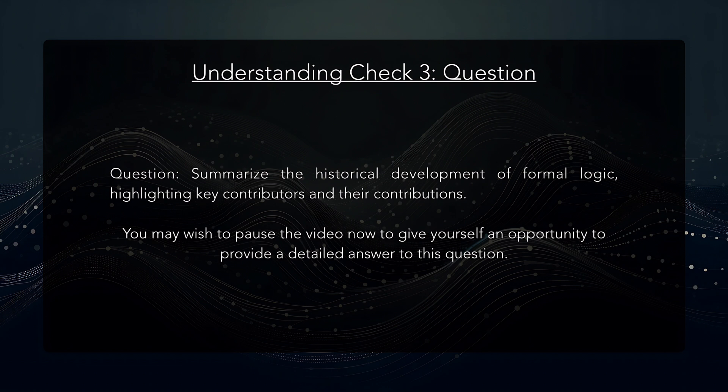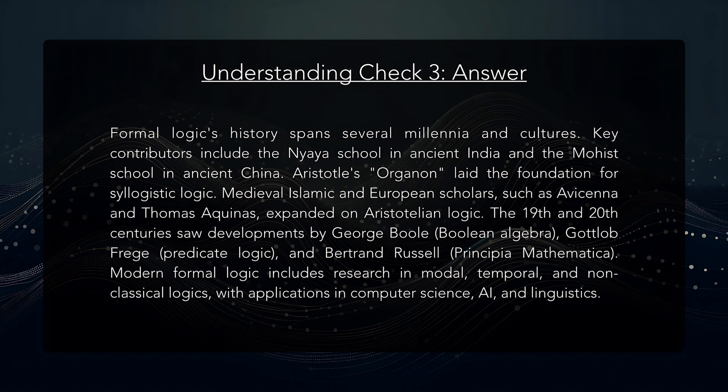Let's take a look at a final question to check our understanding of the material just presented. You may wish to pause the video now to give yourself an opportunity to provide a detailed answer. Question: Summarize the historical development of formal logic, highlighting key contributors and their contributions. Answer: Formal logic's history spans several millennia and cultures. Key contributors include the Nyanya school in ancient India and the Moes school in ancient China. Aristotle's Organon laid the foundations for syllogistic logic. Medieval Islamic and European scholars such as Avicenna and Thomas Aquinas expanded on Aristotelian logic. The 19th and 20th centuries saw developments by George Boole, Gottlob Frege, and Bertrand Russell. Modern formal logic includes research into modal, temporal, and non-classical logics, with applications in computer science, AI, and linguistics.